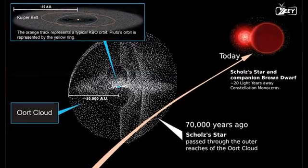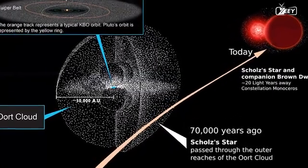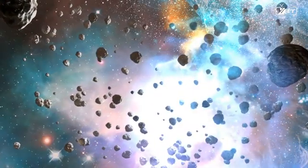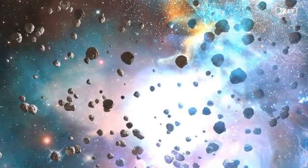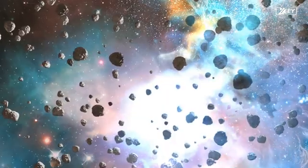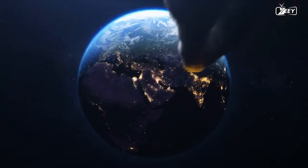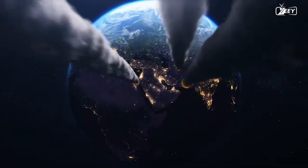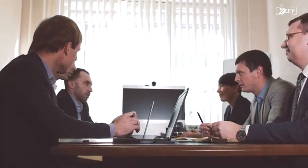According to the theory, this binary system passed so close to the Oort cloud that its gravity pulled all the nearby objects, disrupting the order and orbits of comets and asteroids, sending some of them to the inner solar system and causing a few to crash into Earth.